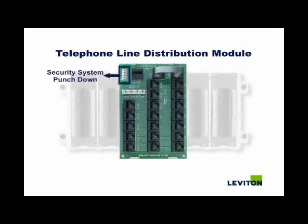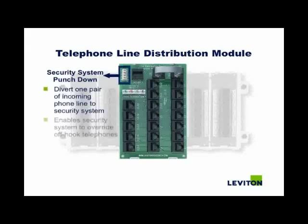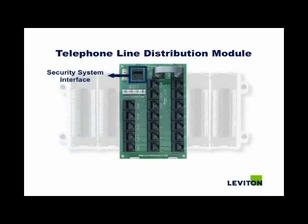This is the security system punchdown, which allows you to divert one pair of incoming phone lines to the security system. It enables the security system to override off-hook telephones and allows the security system to seize a phone line. This is the security system interface that connects to the security system.